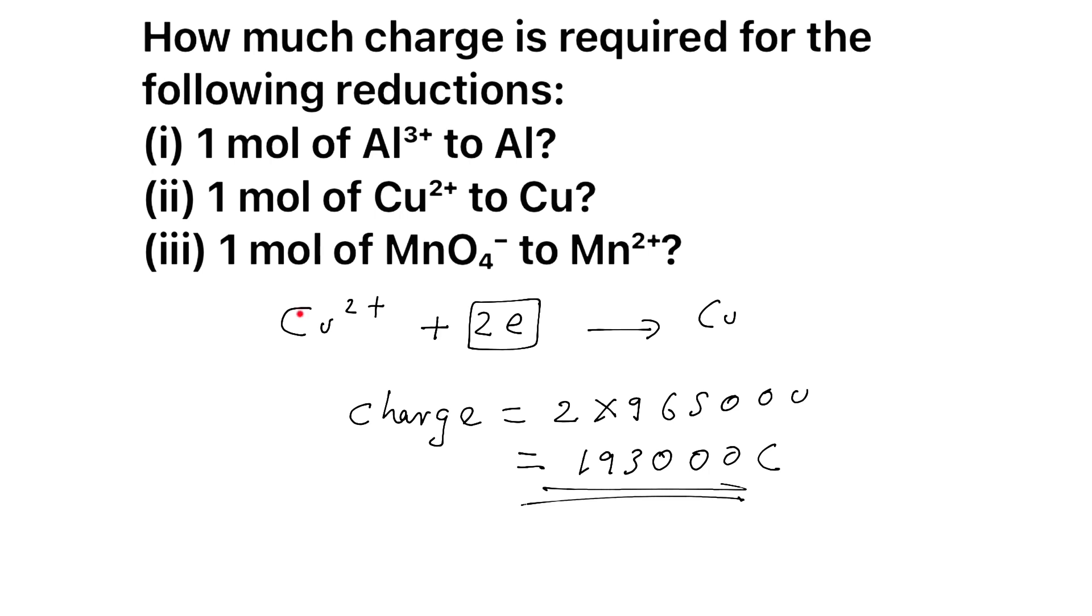Here you have to read this line like what? 1 mol of Cu²⁺ combined with 2 mol of electron to give 1 mol of copper metal. So here how many electrons are involved? 2 mols of electron. And for 1 mol of electron what is the charge? 96500. So for 2 mols of electron, 2 into 96500. I didn't explain the second question too much because from the first question itself you already got an idea how to solve this.